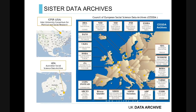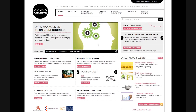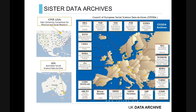This is the Data Archive website — you can go and explore it later. We're part of a bigger international federation of social science data archives around the world: one in Australia in Canberra, and one in America at the University of Michigan. Most of Western Europe has these data archives. We're part of this bigger international network and work very closely together on metadata standards, solutions, and training materials.